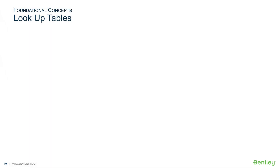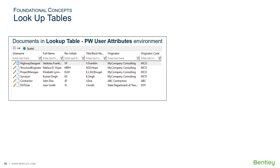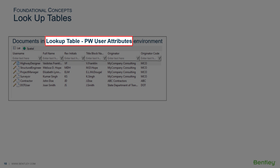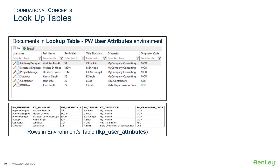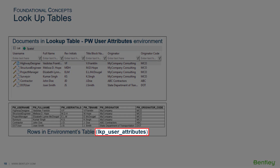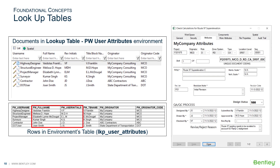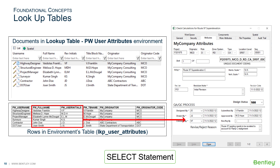In the enhanced environments module, you learned that lookup tables can be configured by creating secondary environments. Each abstract document in the environment represents a row in the lookup table. For the QA/QC information, we will utilize documents in an environment called lookup table pw user attributes. The environment's table name is lookup user attributes. We will use the pw full name and pw user initials columns from the lookup table to create the pick list for the designed by, drawn by, and checked by attributes by using a select statement.